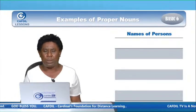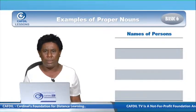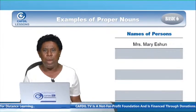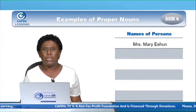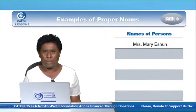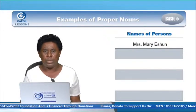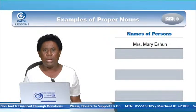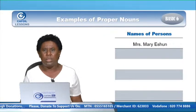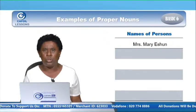Examples of proper nouns — names of persons. Mrs. Mary Eshan. This is a particular name given to a lady or a woman. And it begins with capital M for Mrs., capital M for Mary, and Eshan capital E, because the name is a proper noun — a particular name given to a person.